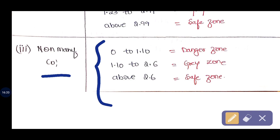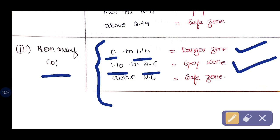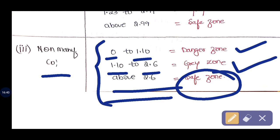For non-manufacturing companies, the benchmarks are: 0 to 1.10 is the danger zone; 1.10 to 2.6 is the gray zone; and above 2.6 is the safe zone.